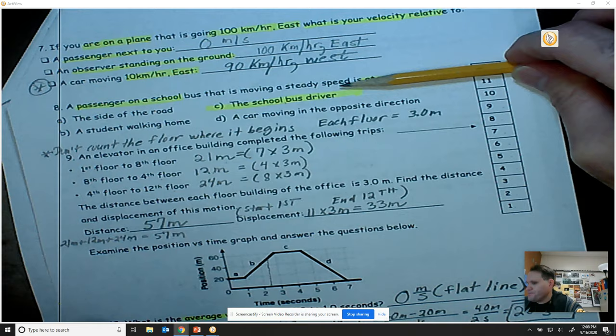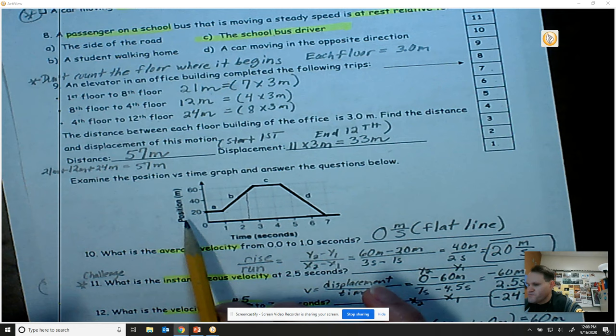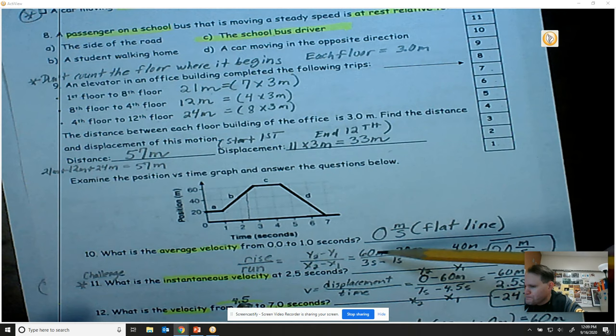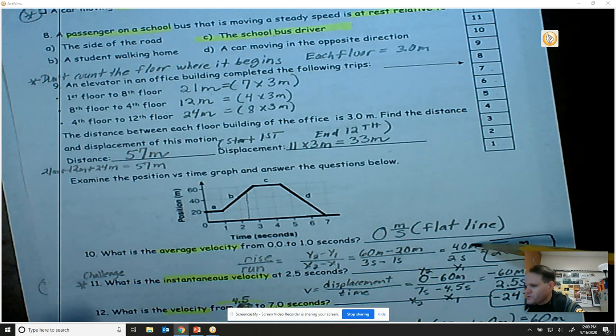All right. For number 10, we have a position versus time graph where you're going to calculate the average velocity from 0 to 1 seconds. Well, 0 to 1 seconds would be segment A. It's 0 because it's flat. Now for number 11, to find the instantaneous velocity, you have to use rise over run, y2 minus y1 divided by x2 minus x1. Pick a couple of points along the line. So I pick 60 meters minus 20 meters divided by 3 seconds minus 1 seconds. And so you'll end up with an instantaneous velocity of 20 meters per second.